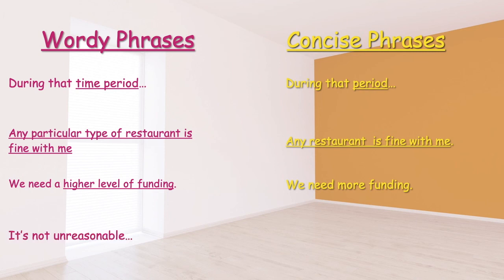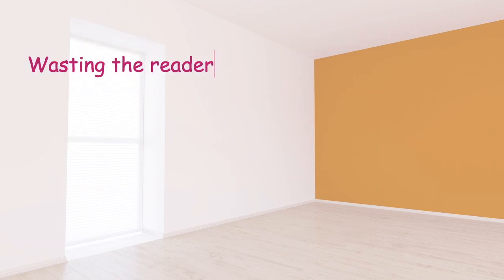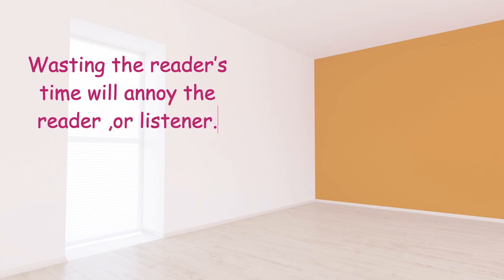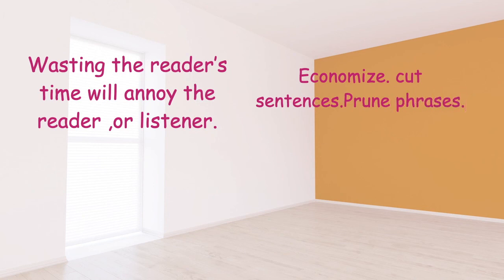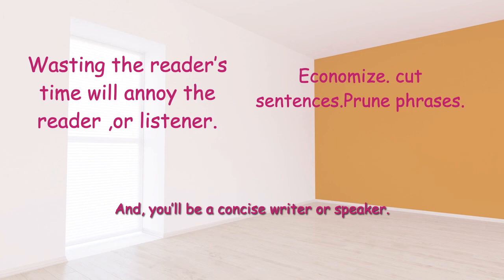Finally: 'It's not unreasonable' — well, if it's not unreasonable, then it must simply be 'reasonable.' With that, go back and read the wordy phrases, then read the concise phrases, compare and contrast, and see which words we cut out. Remember: wasting the reader's time will annoy them. Economize, cut sentences, prune phrases, and you'll be a concise speaker.